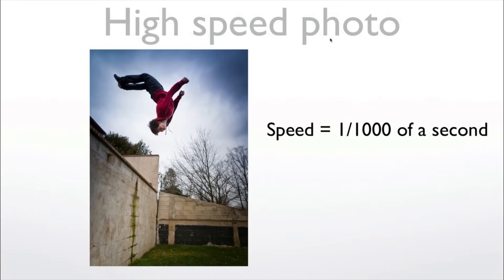Here's an example of a high-speed photo taken during the day. I had a jumper leap into the air and I wanted to freeze him in action, so I shot at 1/1000 of a second. He came out sharp, there was enough light, and the aperture was around F4. That's how I used TV mode — making sure I could freeze the action.